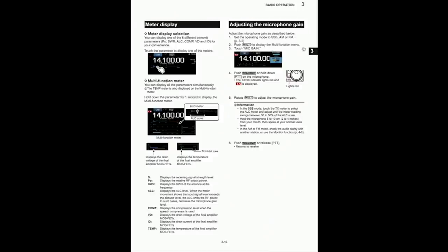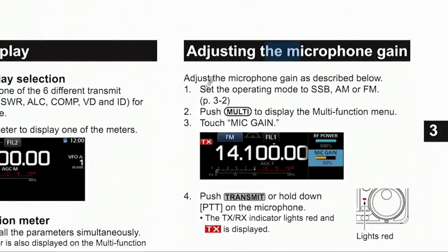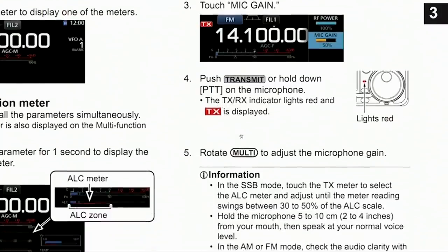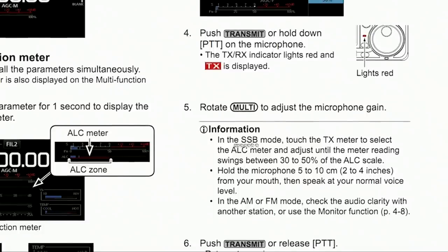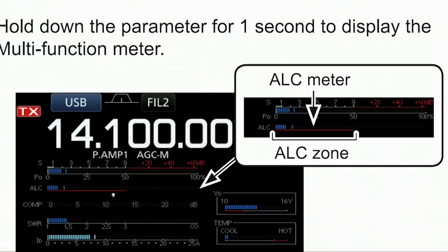Adjusting the microphone gain. Adjust the microphone gain as described below. Set the operating mode to SSB. Push the multi-function display. Touch mic gain. Transmit — the transmit indicator will light up red. Rotate the multi-control to microphone gain. In the SSB mode, adjust until the meter swings to between 30 and 50 percent of the ALC scale.